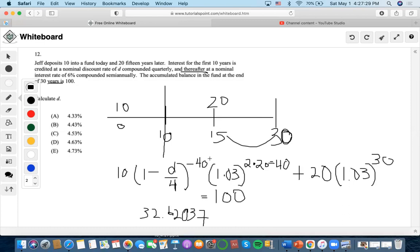Multiply by this, and then 1.03 to the 30th equals 48.5452.